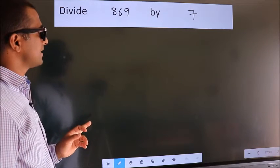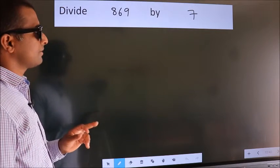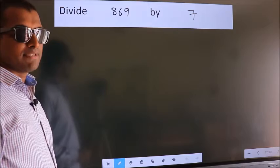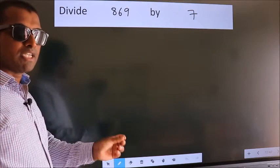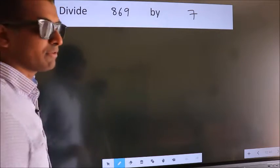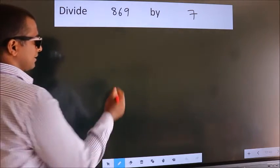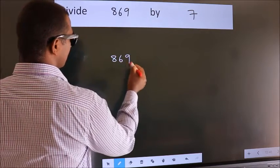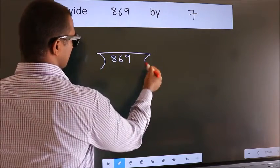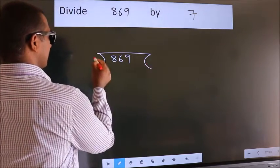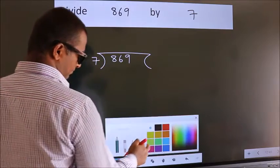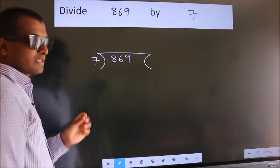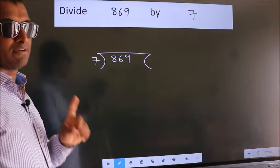Divide 869 by 7. To do this division, we should frame it in this way: 869 here, 7 here. This is your step 1.